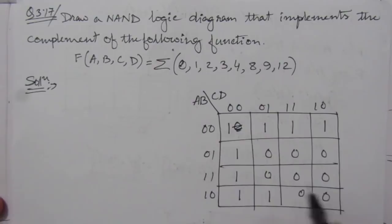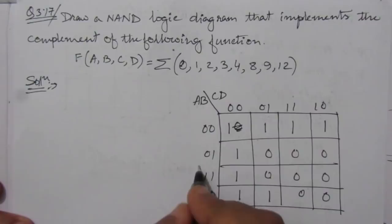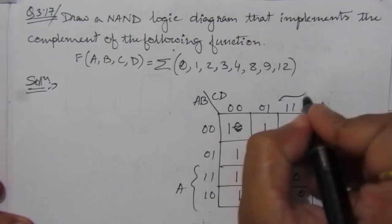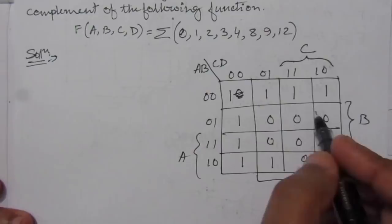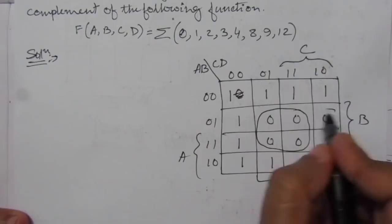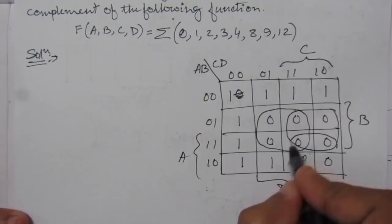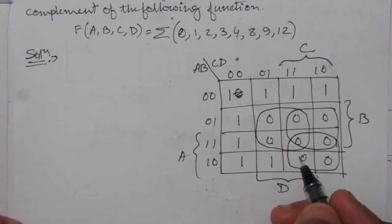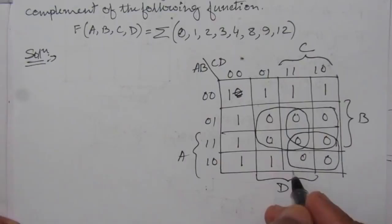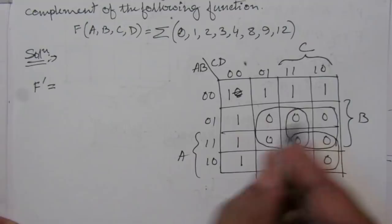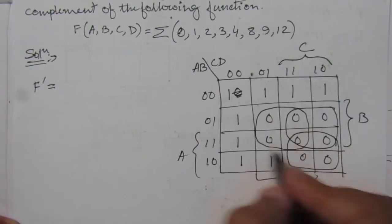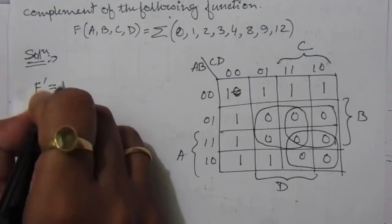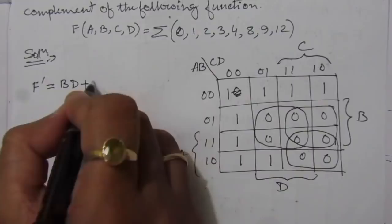These are the zero values. Let us label: A, B, C, D. From these zeros we can form three groups: the first term, the second term, and the third term. Since we are considering zeros, we write the expression as F complement. From the first group we get BD, from the second group we get BC, and from the third group we get AC.